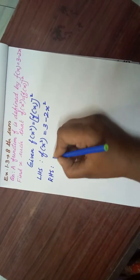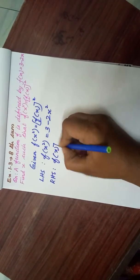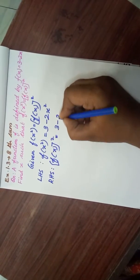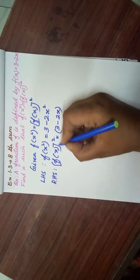RHS: [f(x)]². f(x) is 3 - 2x, the whole square.